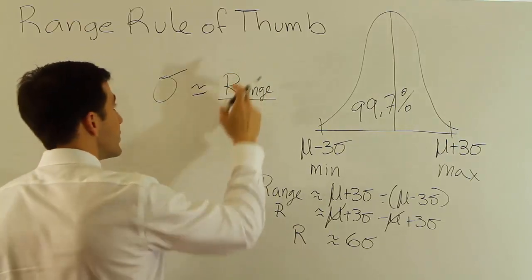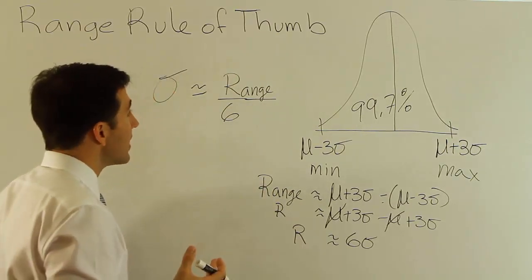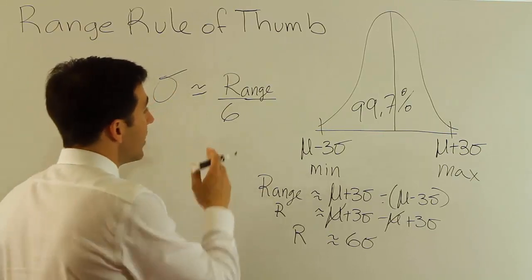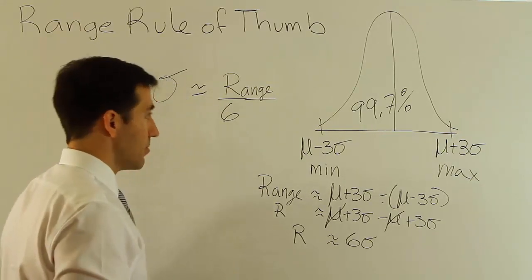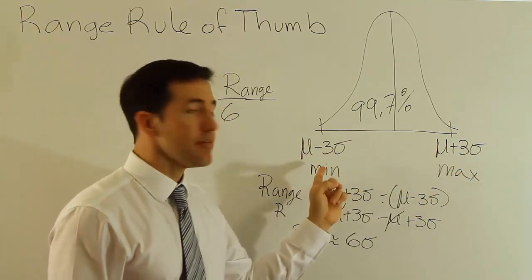Now you may have seen it as the range over four, or you may have seen both given. What I'll say about that is that the range over six is probably safer in my opinion, because if things aren't bell-shaped, you know that a span of three standard deviations above and below, according to Chebyshev's theorem, must contain at least 89.9% of the data.